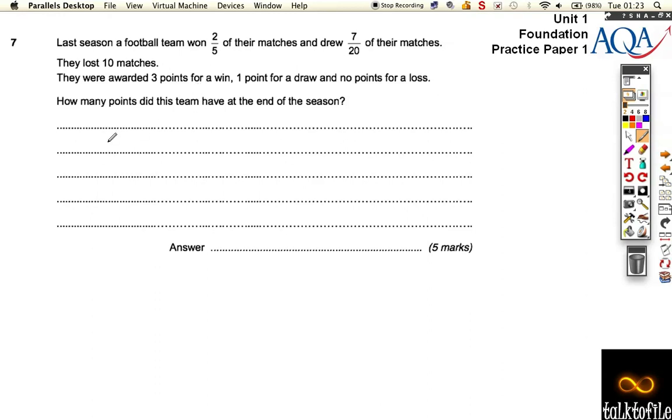So the first idea is to work out how many they won, lost and drew. So if I just put won, drew and lost here. Well, we know that they won 2 fifths, but we don't know what the total is, so we can't work out how many games yet.